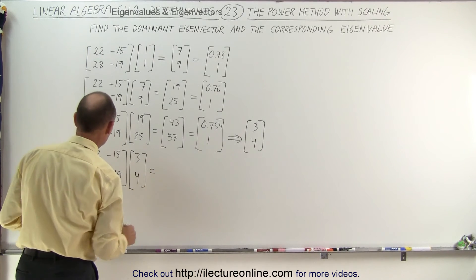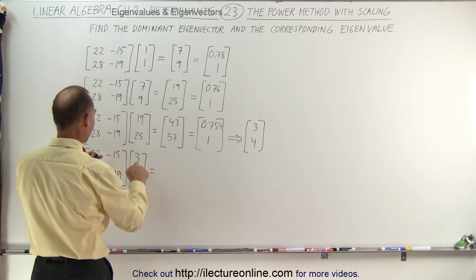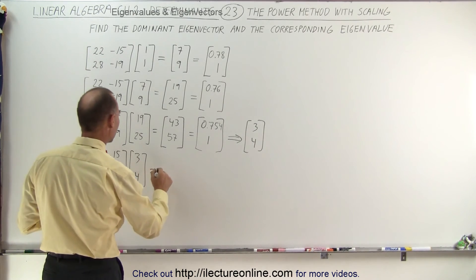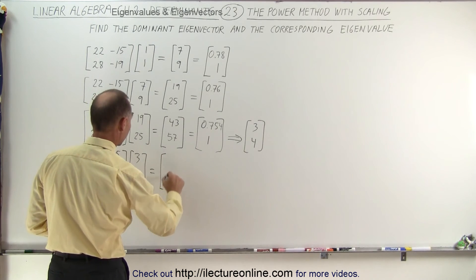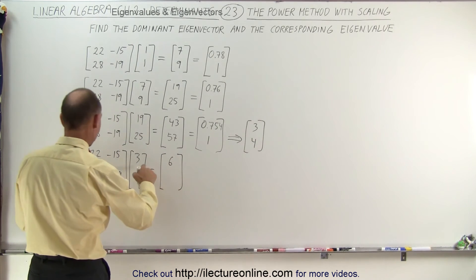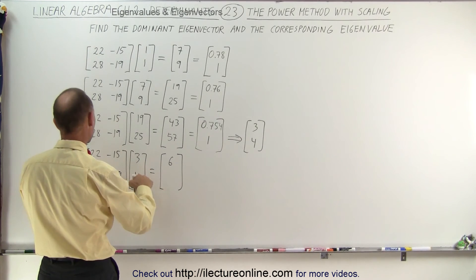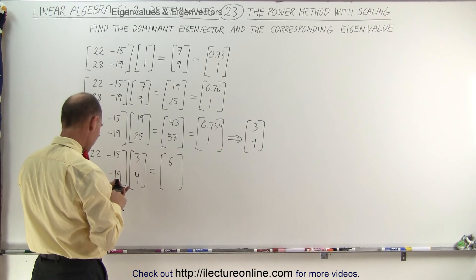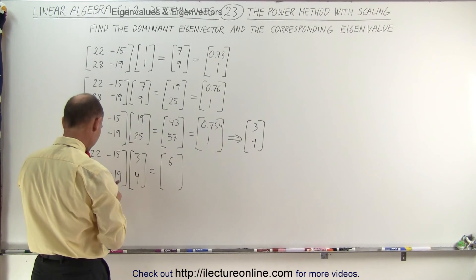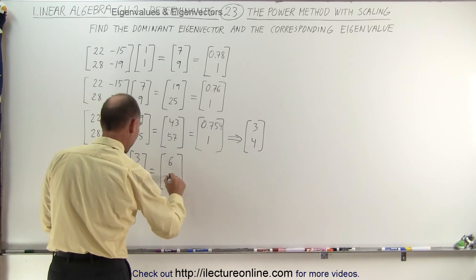Let's see what we get. So that would be 66 minus 60, which is 6. And here we get 28 times 3. That would be 84. Let's see here. 28 times 3 minus 19 times 4. So it's this minus this. And that gives us 8.